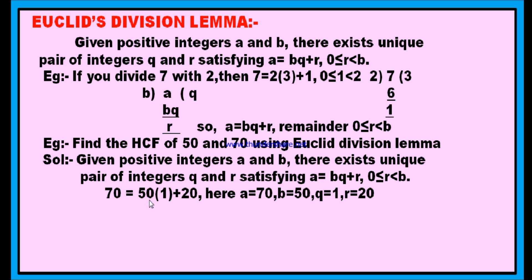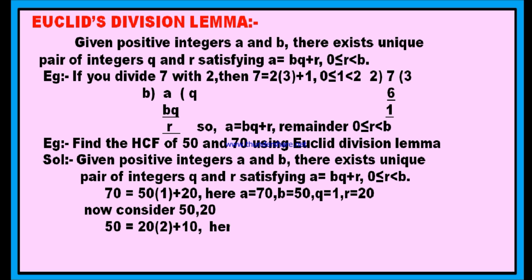Since the remainder is not 0, we continue. We now consider the divisor and the remainder from the previous step: 50 and 20. Out of 50 and 20, 50 is greater than 20, so divide 50 with 20. You can write 50 as 2 times of 20, which is 40, and the remainder is 10. Therefore, 50 equals 20 into 2 plus 10. Here A equals 50, B equals 20, Q equals 2, and remainder is 10. Again the remainder is not 0, so we go to the next step considering divisor 20 and remainder 10.